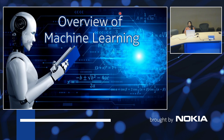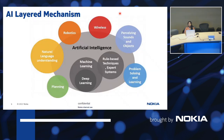Let's have an overview of machine learning in detail. We have an artificial intelligence layered mechanism. First, artificial intelligence, then machine learning and deep learning — both are part of artificial intelligence. Machine learning requires rule-based techniques and expert systems to process the output.